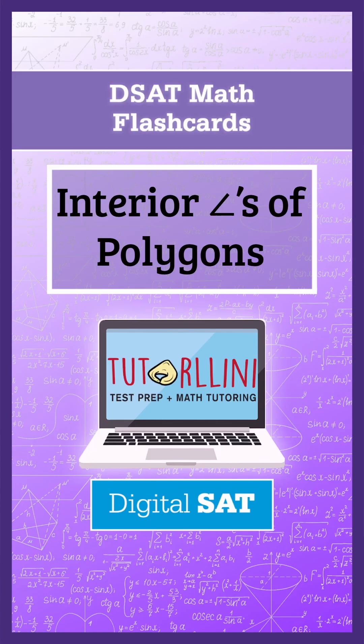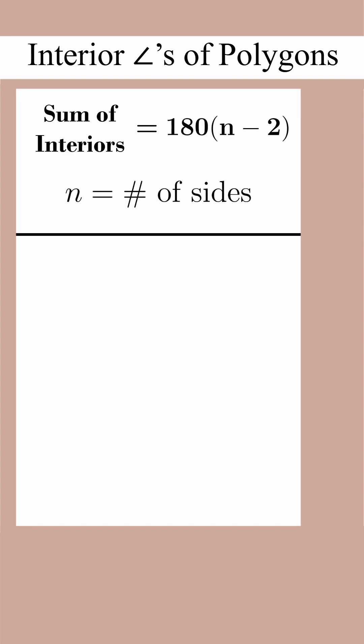Digital SAT Math Flashcards: Interior Angles of Polygons. The sum of interior angles in a polygon is equal to 180 times the quantity (n-2), where n is the number of sides.